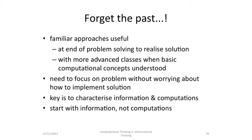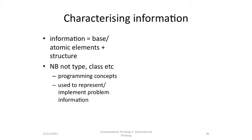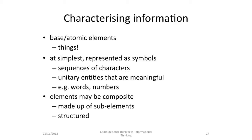We should start with information, not with computations. Information is base atomic elements plus structure — I'm not talking about types or classes; these are programming concepts used to represent and implement problem information. The base atomic elements are things — just things we talk about in the real world. Of course, we represent them as symbols using sequences of characters, and we try to use entities that are meaningful, like words and numbers. Our things may themselves be composite — made up of sub-elements of other things — they may be structured.